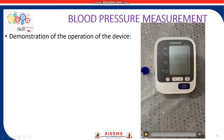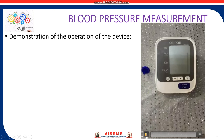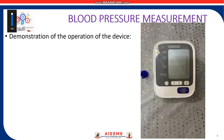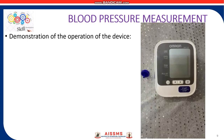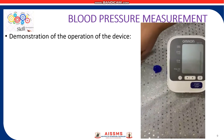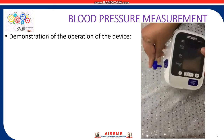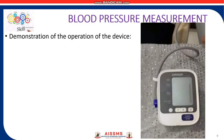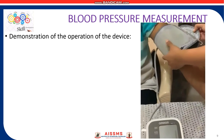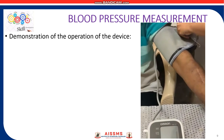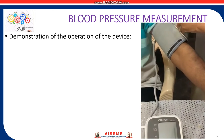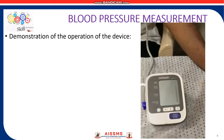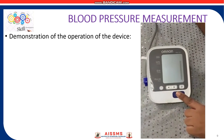Let us now see the demonstration of the operation of the device. The first step for monitoring blood pressure using the automatic blood pressure monitor is to insert the air plug into the air jack securely. Step two is to put your arm through the cuff loop. Step three is to close the fabric and fasten firmly. The next step is to press the start/stop button.